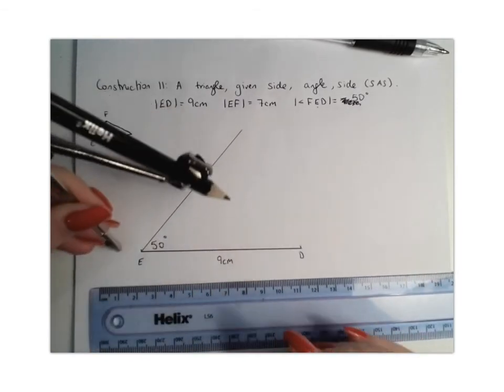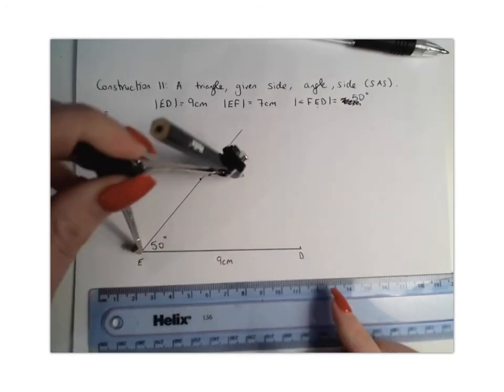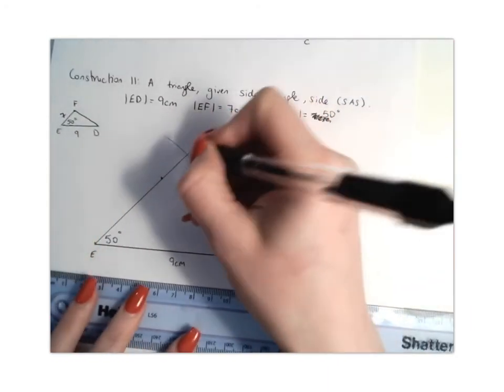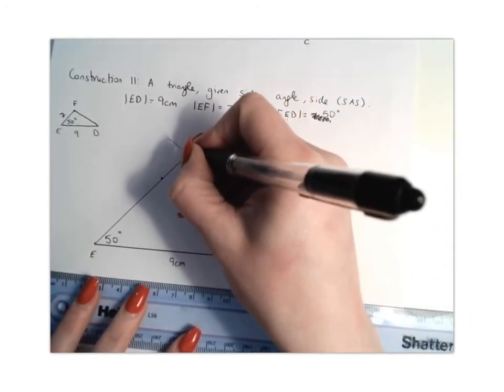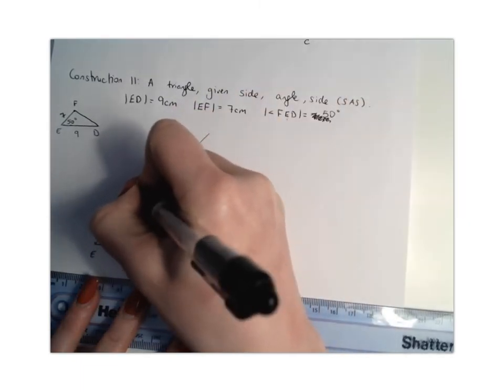And then you're going to go to point E and draw an arc. Where that arc meets your line is where your 7cm distance is, which represents point F. So I can mark that as 7cm.